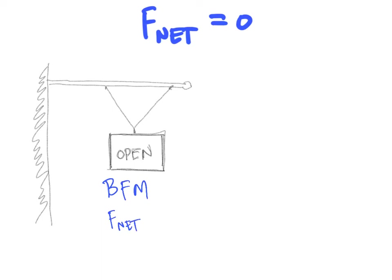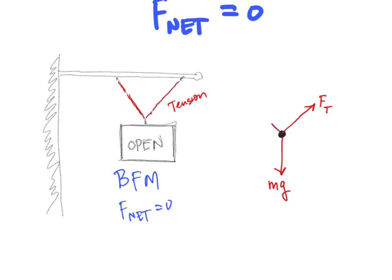The net force on that sign is going to be zero. To draw a free body diagram for the sign, I'm going to draw a dot representing the sign. I know I've got gravity acting straight down. The strings are going to exert forces upward — since they're ropes, these are tension forces. So I'll draw two arrows: one going up at an angle labeled F sub T, and another at an equal angle on the other side, also labeled F sub T. These two angles are equal, and all of the forces balance.